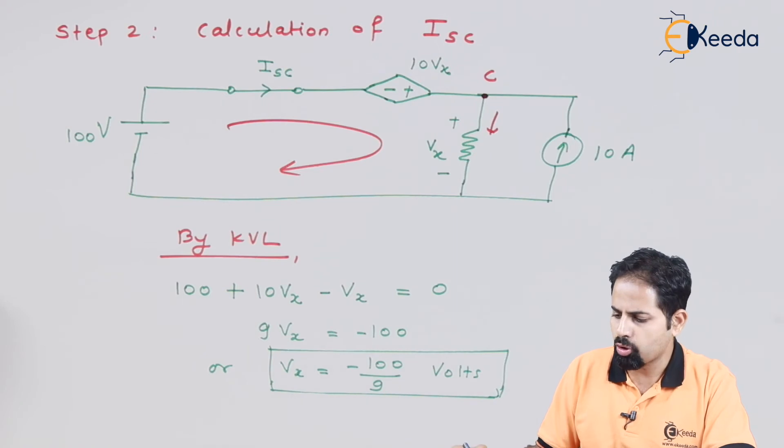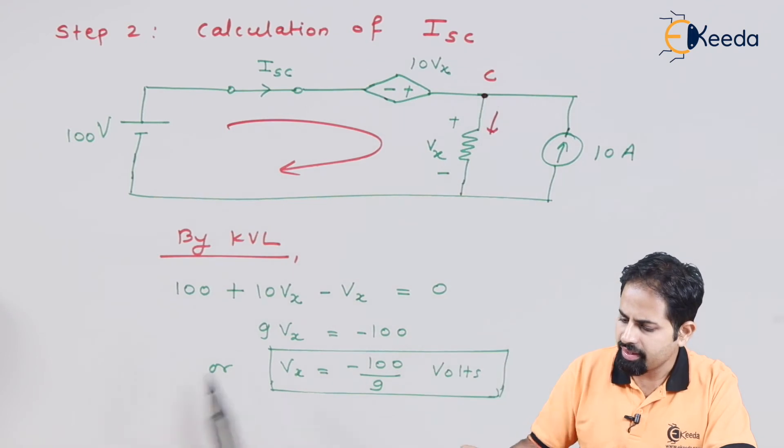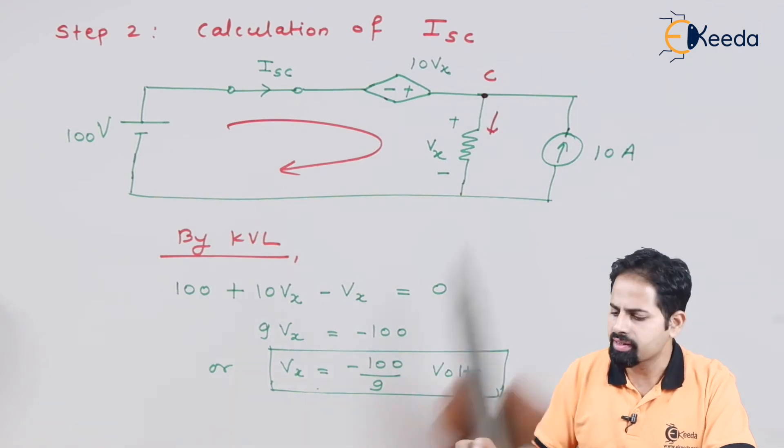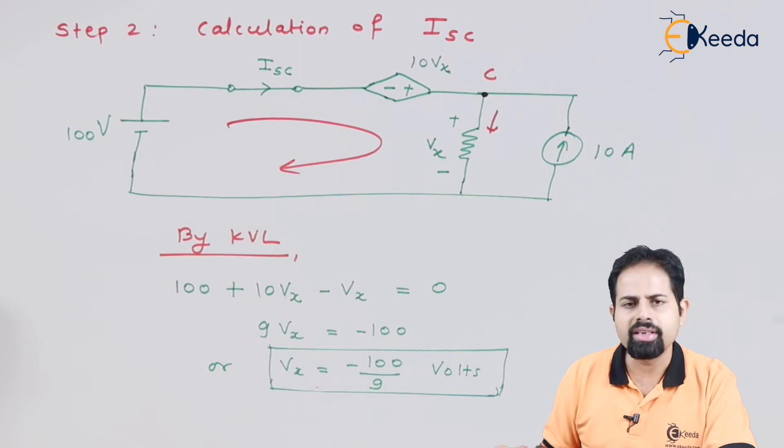So Vx we got as minus 100 by 9. Minus means polarity should be reversed. Now if we apply KCL here, by KVL we got value of Vx. If we apply KCL here, we get here ISC plus 10 equal to current across this branch which is Vx